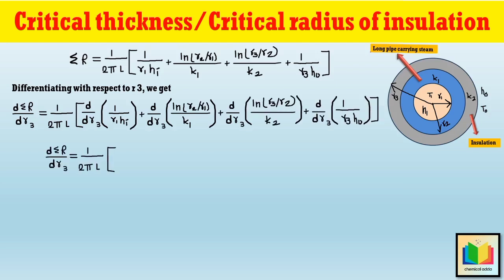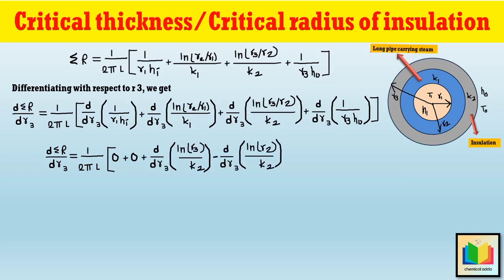The first term, 1/(r1·hi), is constant with respect to r3, so its derivative is 0. The second term contains r2, r1, and k1, none of which depend on r3, so its derivative is also 0. For the third term, applying the derivative of ln(r3/r2)/k2 gives (1/k2)·(1/r3). For the fourth term, 1/(r3·ho), the derivative with respect to r3 is −1/(ho·r3²).